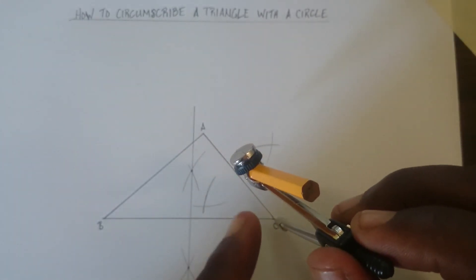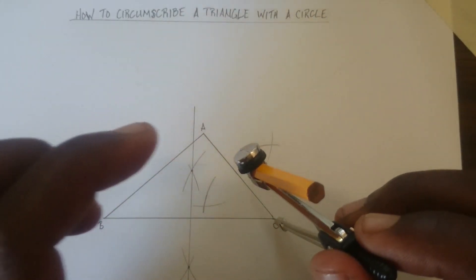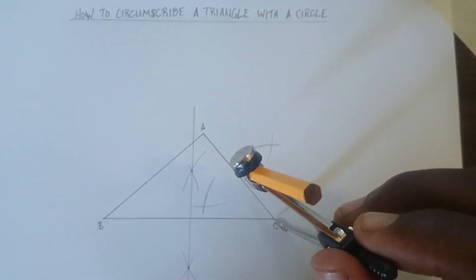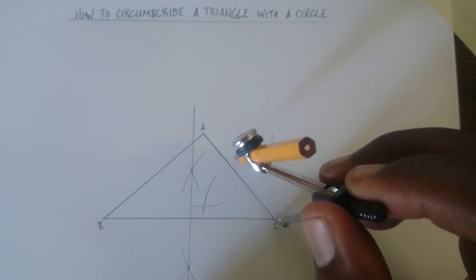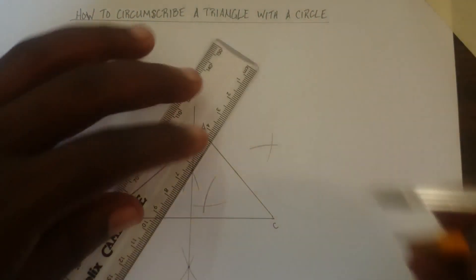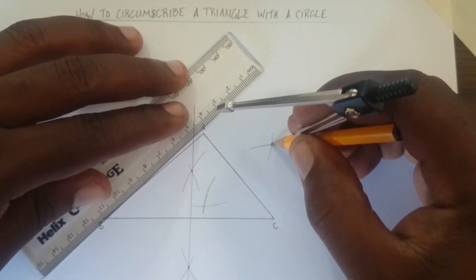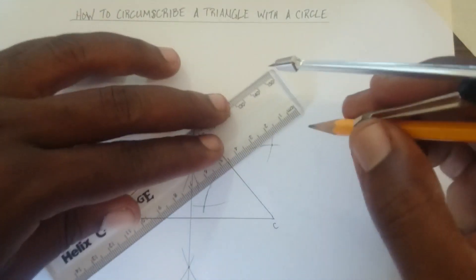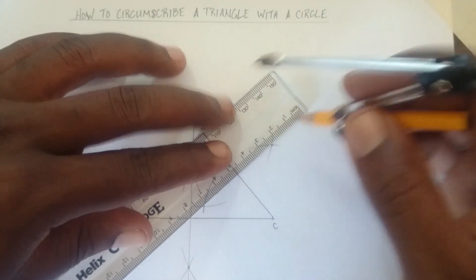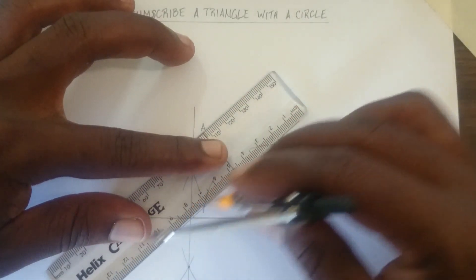If your compass moves, then you have to start over. Do not try to adjust it back to where it was. Always start over when your compass moves. It's very important. So you connect the two points and draw a line.